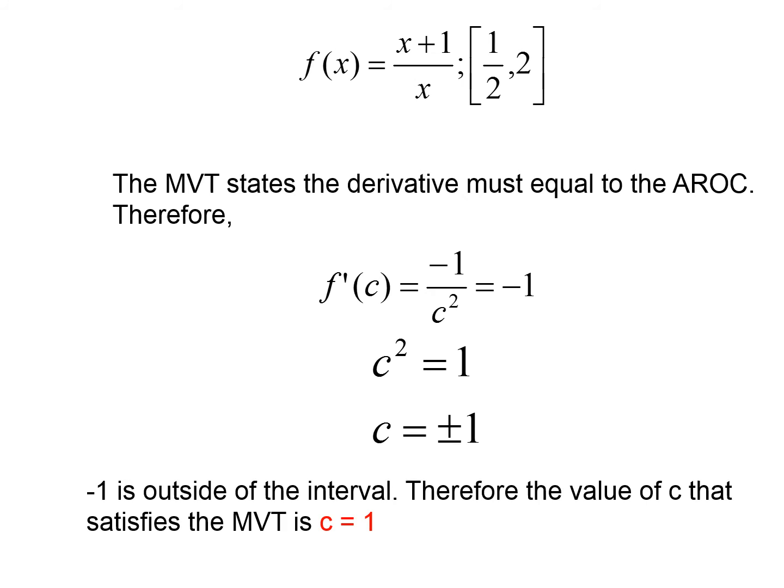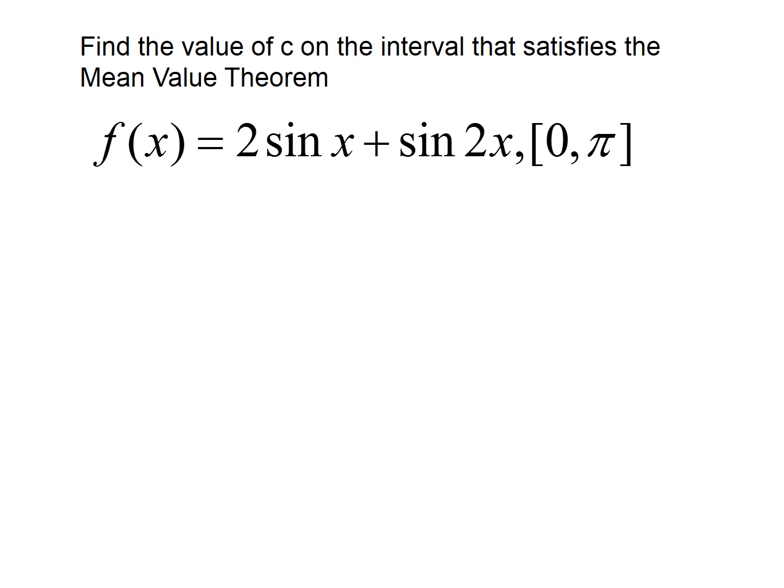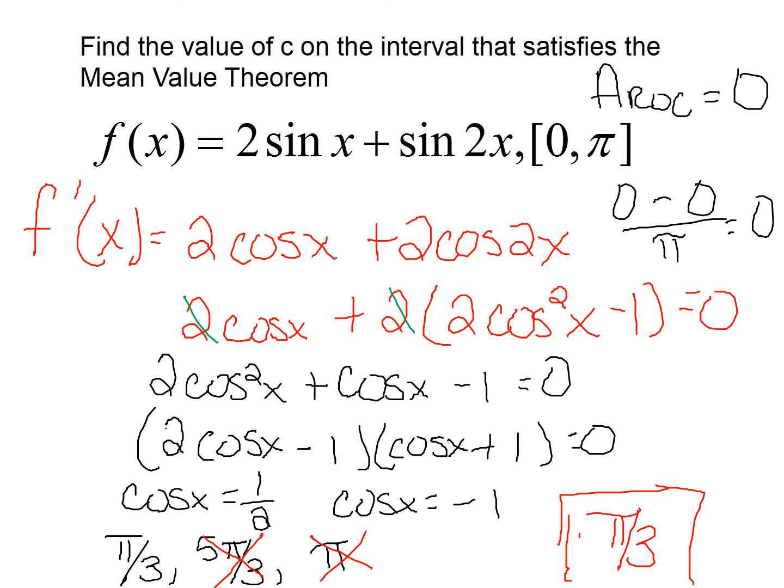Try the next problem: find the derivative, set it equal to the average rate of change, and find the value of c. The average rate of change was 0. We found the derivative, set it equal to 0, and used trig to solve for cosine x. We discarded 5π/3 and π because they are outside the interval. Notice the interval was from 0 to π, and we need values over an open interval, not a closed interval.